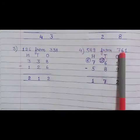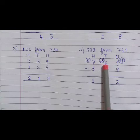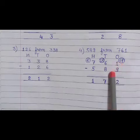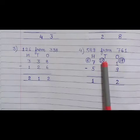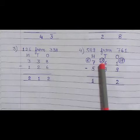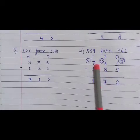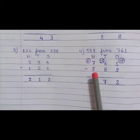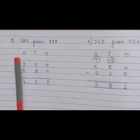Next question. Subtract 589 from 761. 1s, 10s and 100s. Then write 761 minus 589. Now 1 minus 9, it is not possible. So take carry 1 from this 6. Now 1 becomes 11. So 11 minus 9 equals to 2. And 6 becomes 5. So 5 minus 8, it is also not possible. So take carry 1 from this 7. Now 5 becomes 15. So 15 minus 8 equals to 7. And this becomes 6. So 6 minus 5 equals to 1. So 172 is our answer.